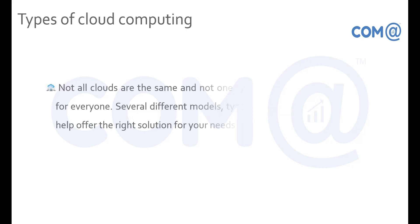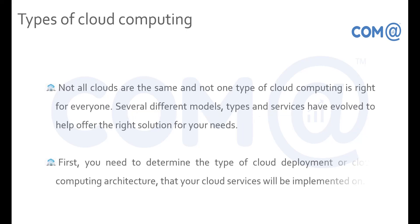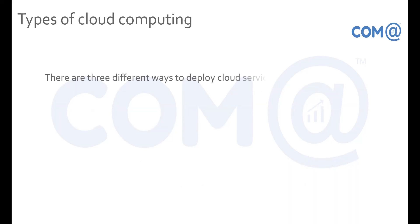Now we'll understand the types of cloud computing. Not all clouds are the same, and not one type of cloud computing is right for everyone. Several different models, types, and services have evolved to offer the right solution for your needs. You need to determine the type of cloud deployment or architecture that your cloud services will be implemented on. There are three ways to deploy cloud services: public cloud, private cloud, and hybrid cloud.